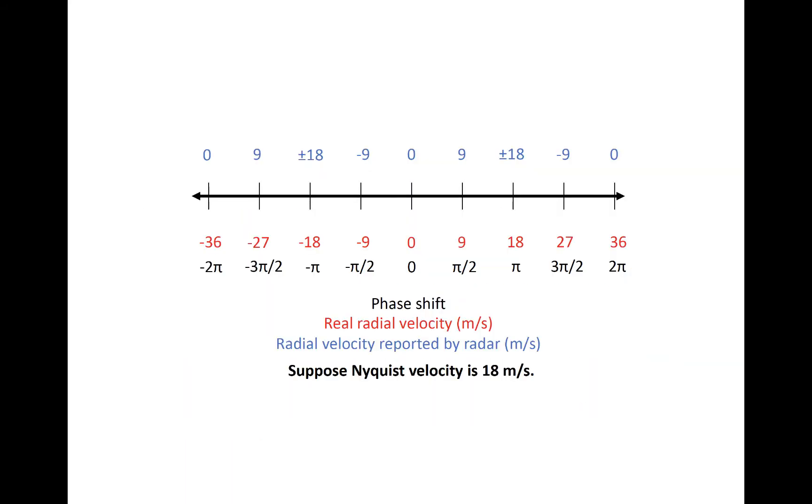The ambiguity in Doppler velocity is illustrated here, on a number line. Suppose, just for example, that the Nyquist velocity of a radar is 18 meters per second. If so, then a phase shift of plus or minus pi yields a Doppler velocity reported of plus or minus 18 meters per second.